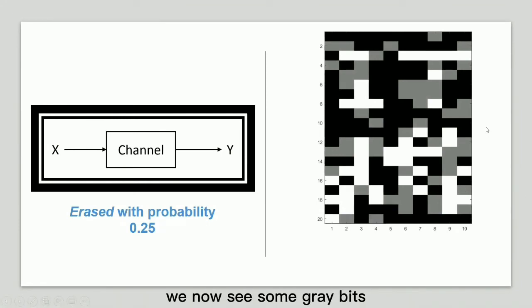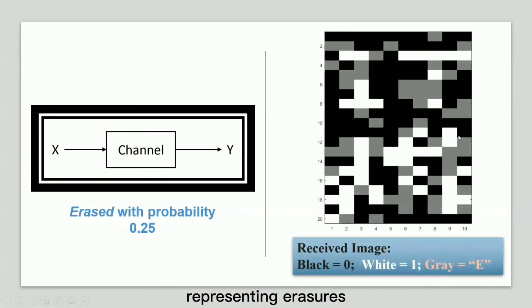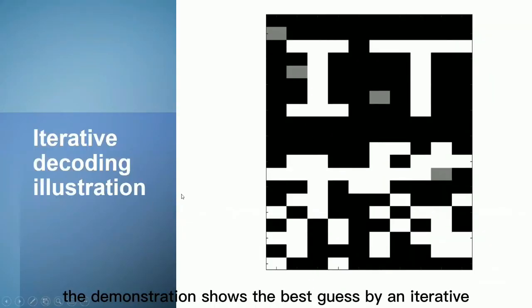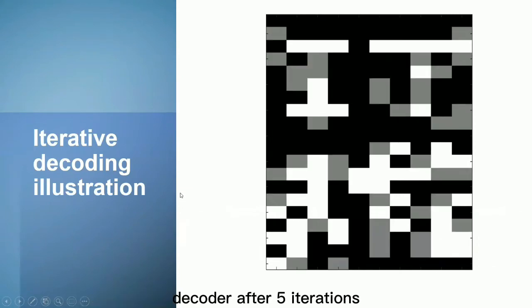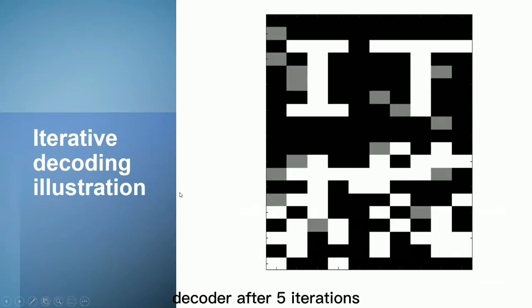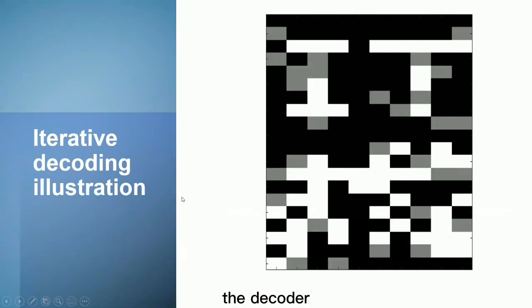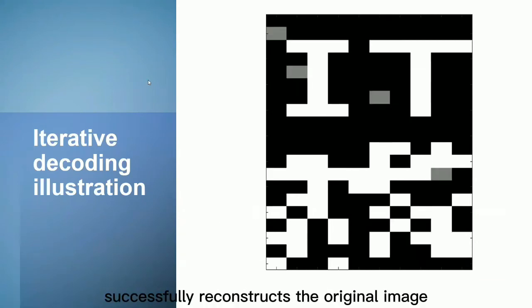we now see some grey bits representing erasures. At around one second interval, the demonstration shows the best guess by an iterative decoder after five iterations. After the fifth iteration, all parity checks are satisfied. The decoder successfully reconstructs the original image.